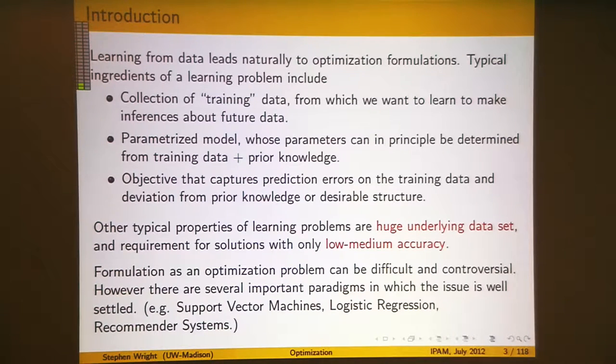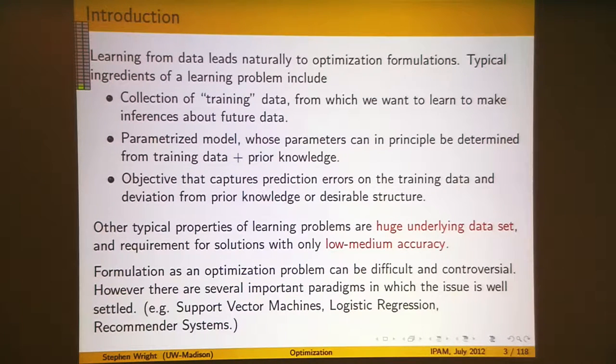Non-convexity is another important property, particularly in deep learning. Formulating the optimization problem is well established in some cases — support vector machines have been around for decades and are well understood as linear or quadratic programs; logistic regression involves maximizing a likelihood function; recommender systems involve learning a low-rank matrix from partial observations. Other areas are less settled and people are still exploring different optimization formulations.